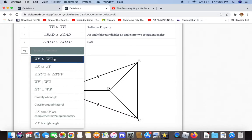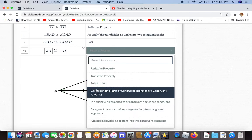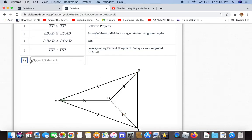We can also say that BD and CD are congruent by corresponding parts of congruent triangles.